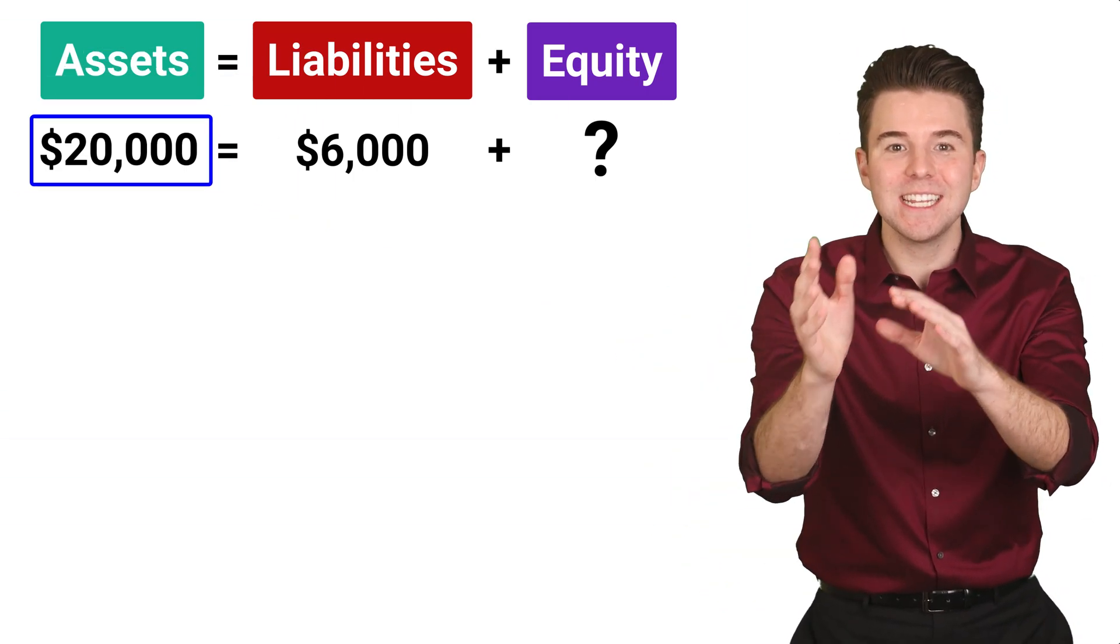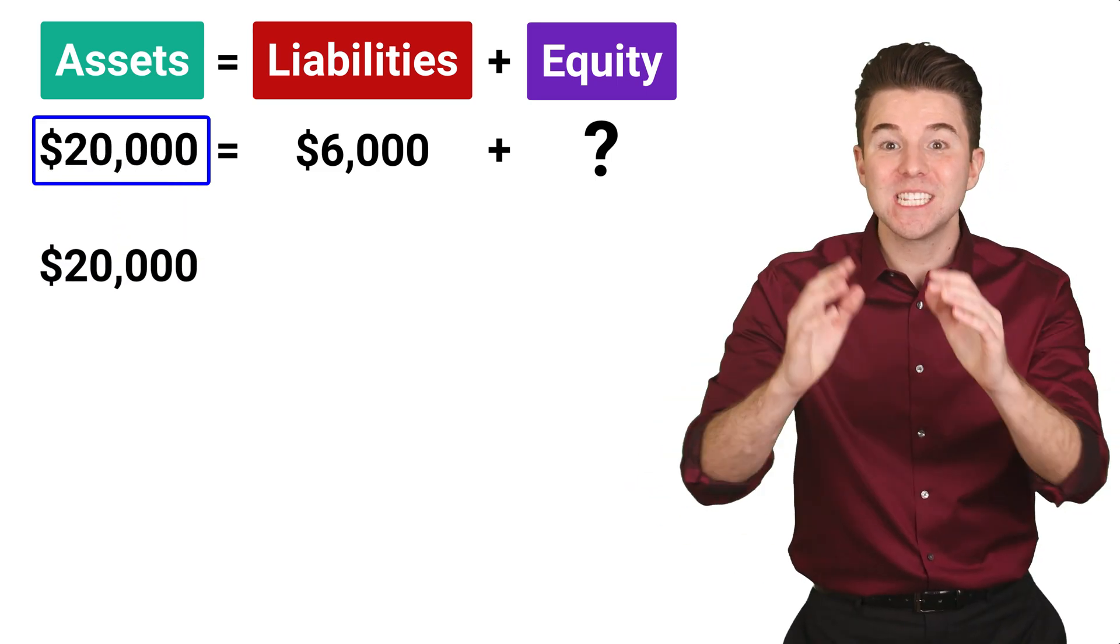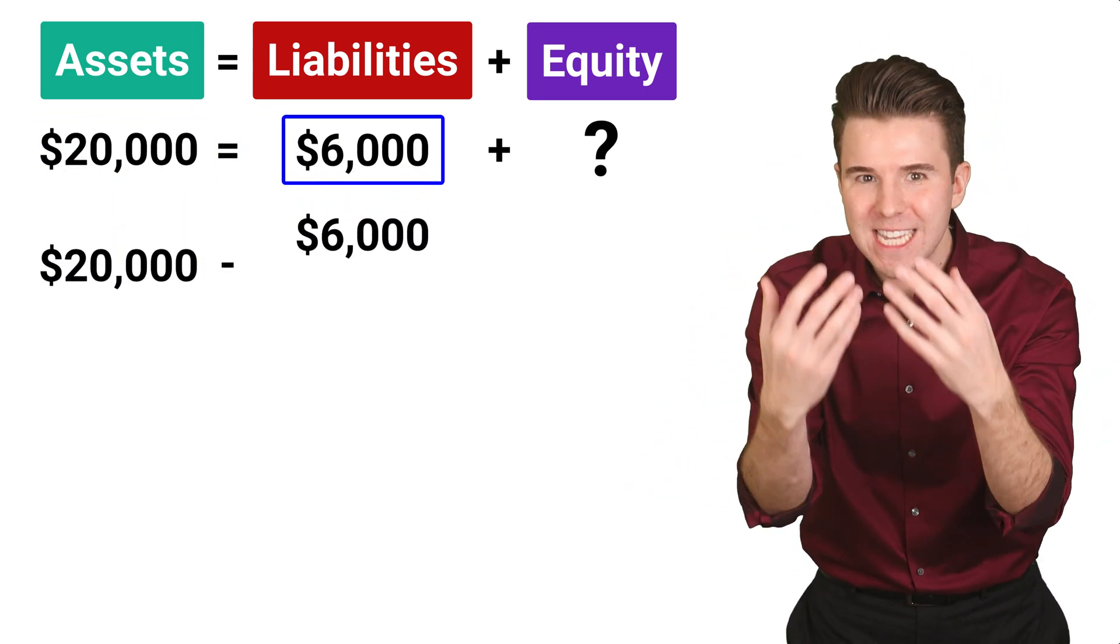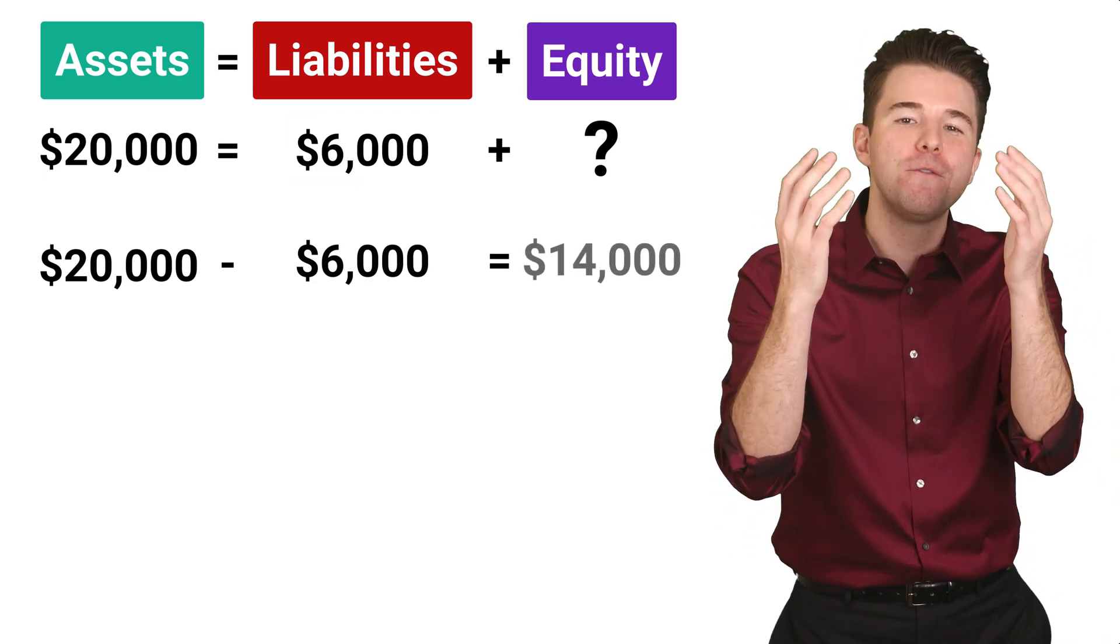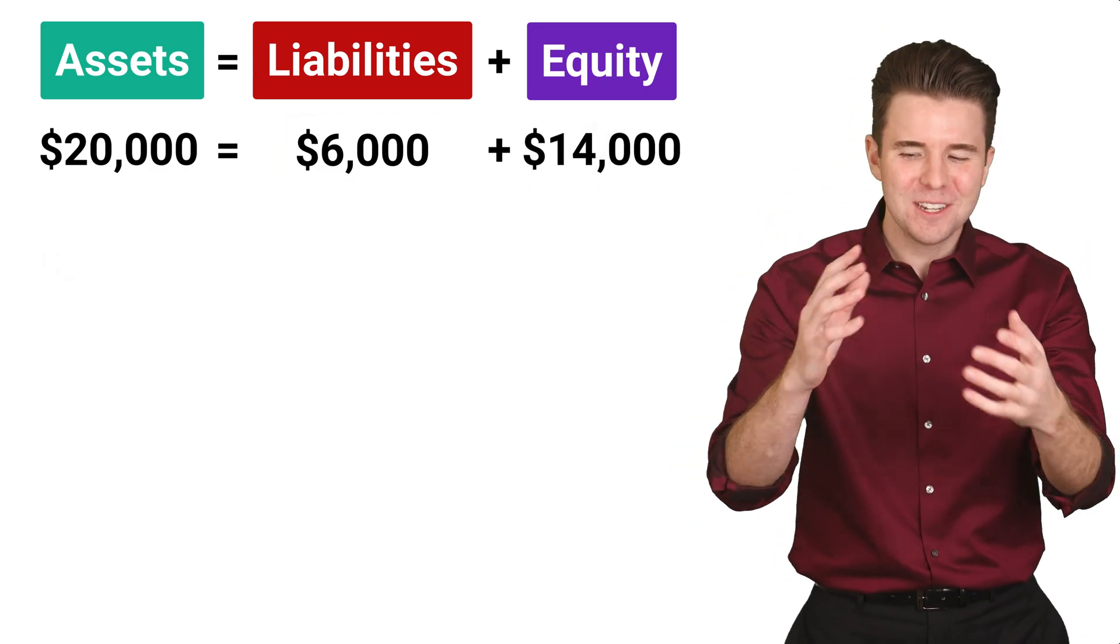we take assets of 20,000 and subtract liabilities of 6,000 to get our missing amount for equity of 14,000. Not too bad, right?